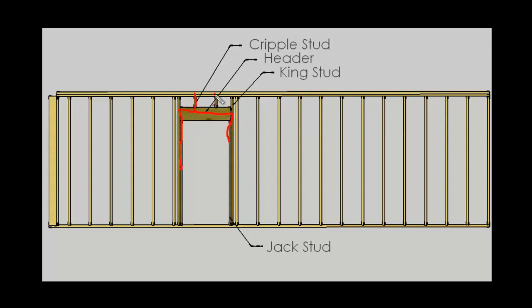With the cripples in place, we can now see how the load moves from the top plate through the cripples, across the header, and down the jack studs into the rest of the building system. That's all there is to it with a door opening.